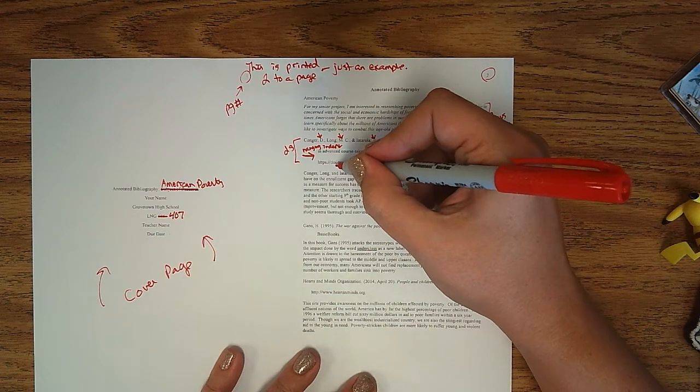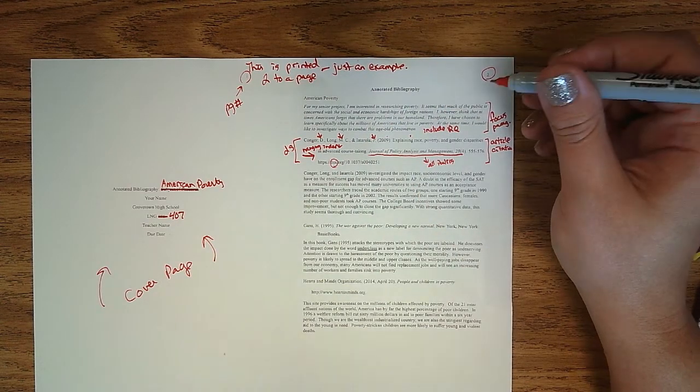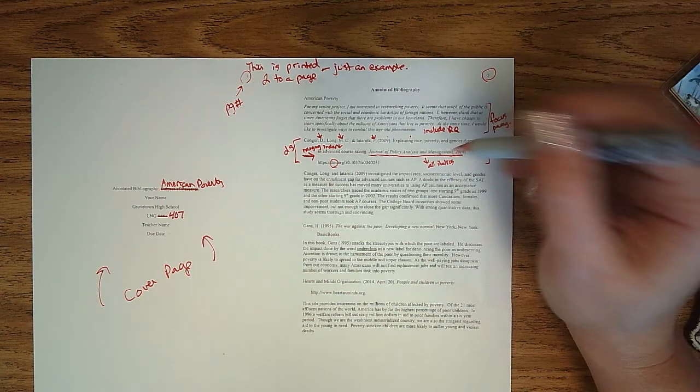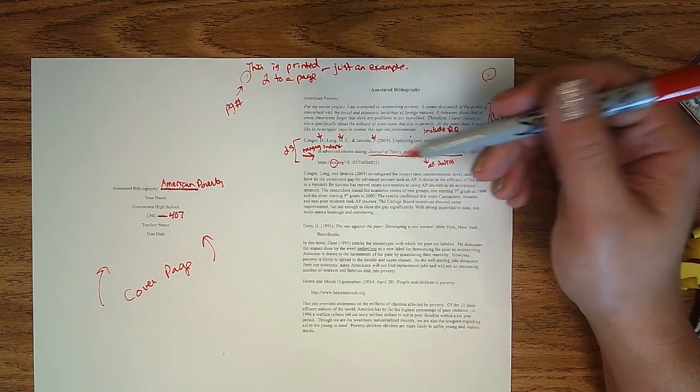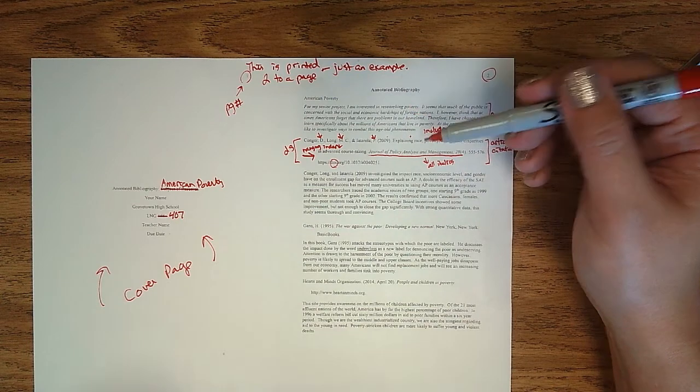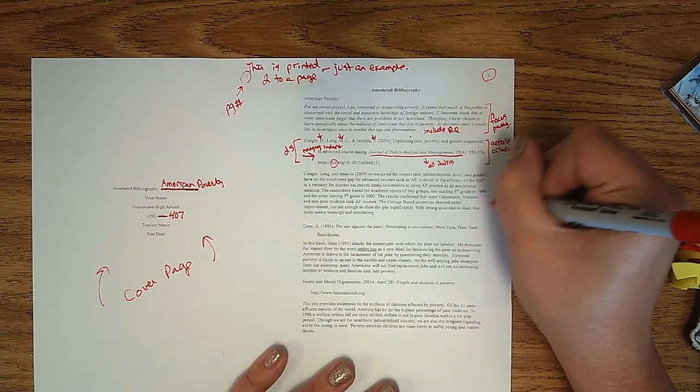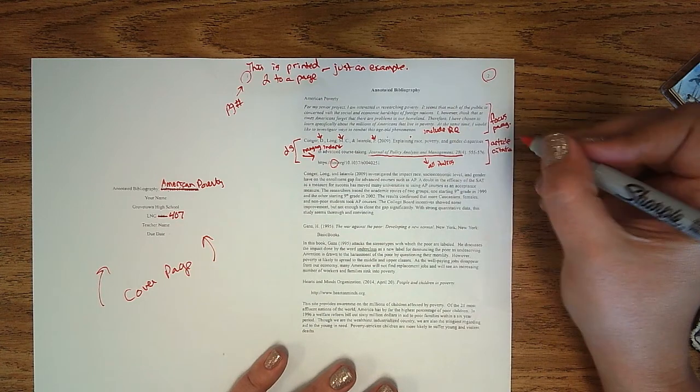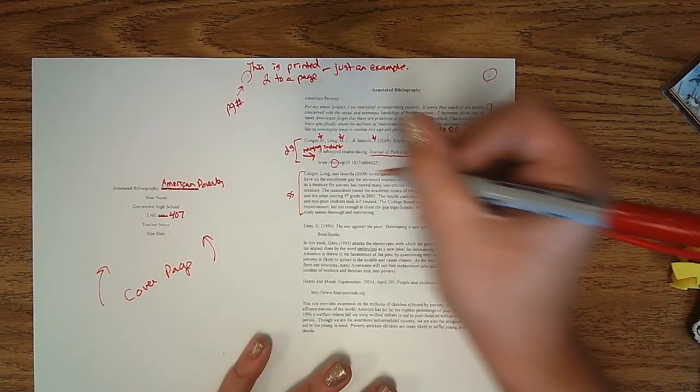So the DOI number is almost like an article social security number. If you put that link into any search engine it would take you to that article. Maybe not that article because I faked that DOI. But it will take you where it needs to go. And then you have here this summary of what that article is about. And you'll notice that it is single spaced. Single spaced.